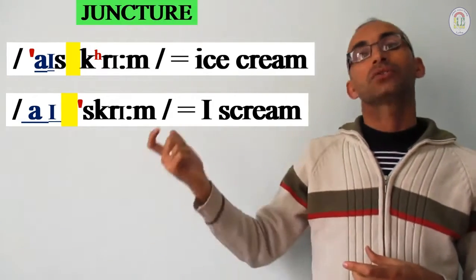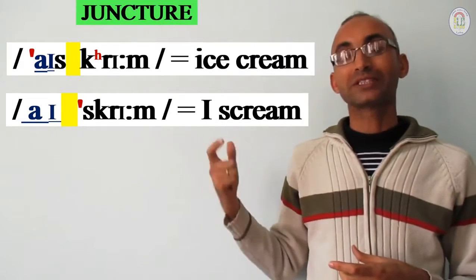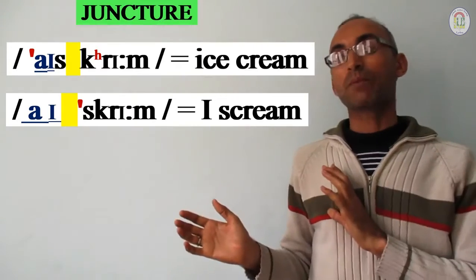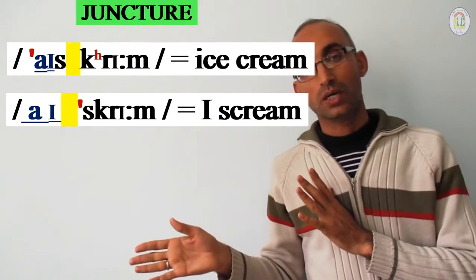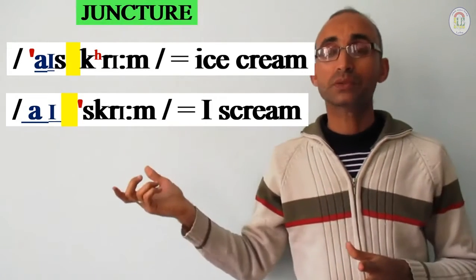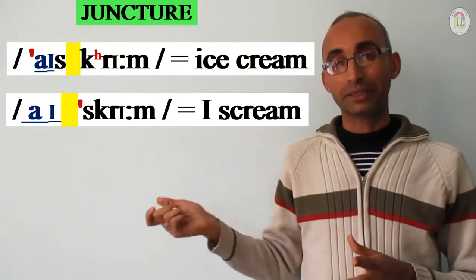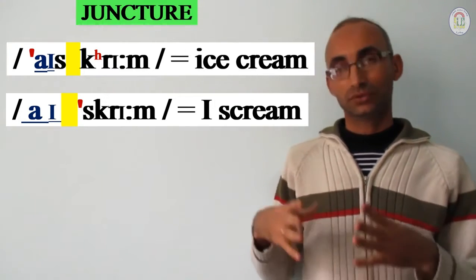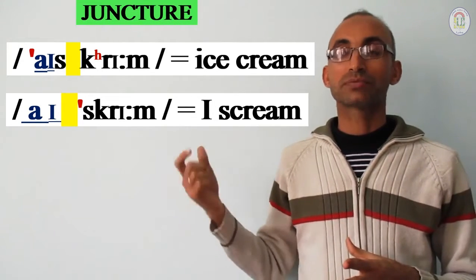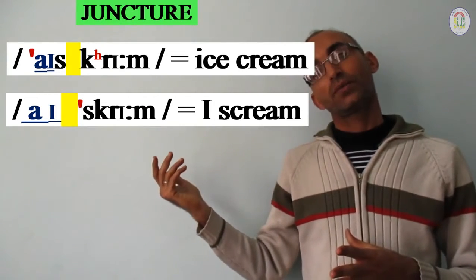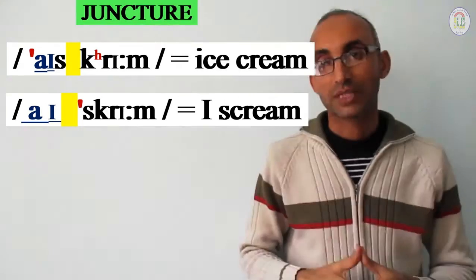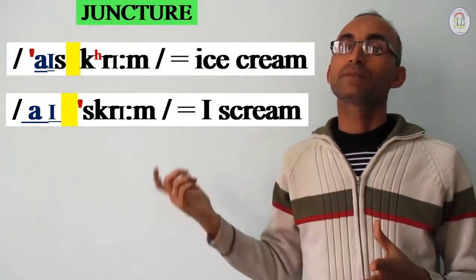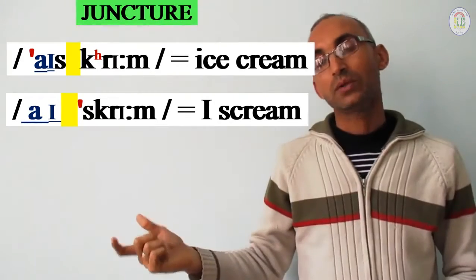Whereas in the second utterance 'I scream,' 'scream' is a verb — a content word — so it is stressed, and 'I' is unstressed because it's the pronoun. So to distinguish between the compound noun and the sentence: in the first one the vowel is shorter and 'k' is aspirated, whereas in 'I scream' the 'I' is longer and stress is on the second word. These elements all belong to juncture and help distinguish between the two types of utterances — the compound noun and the sentence.